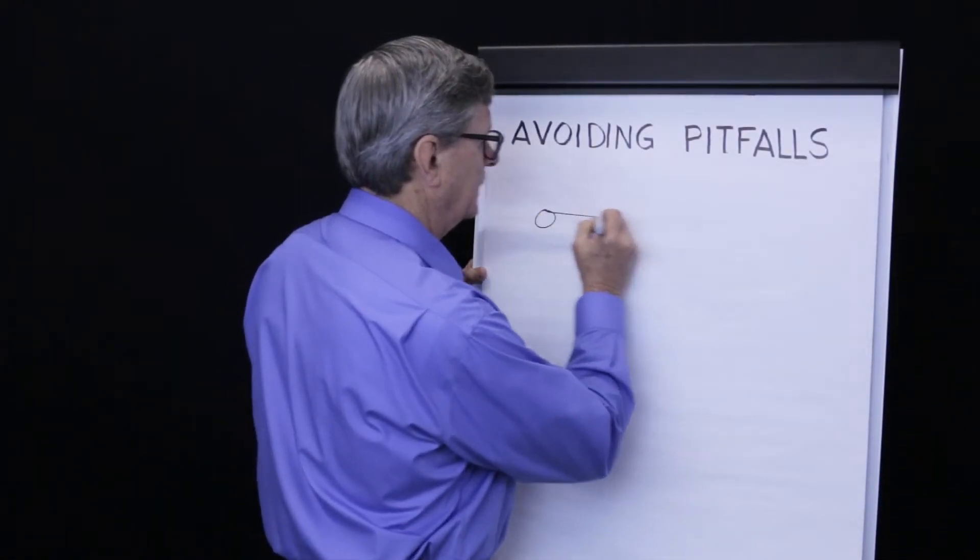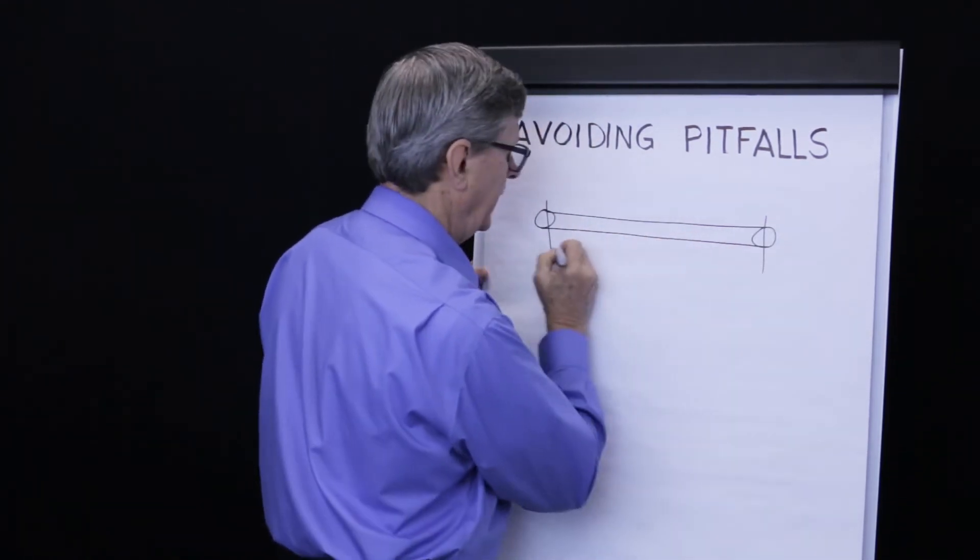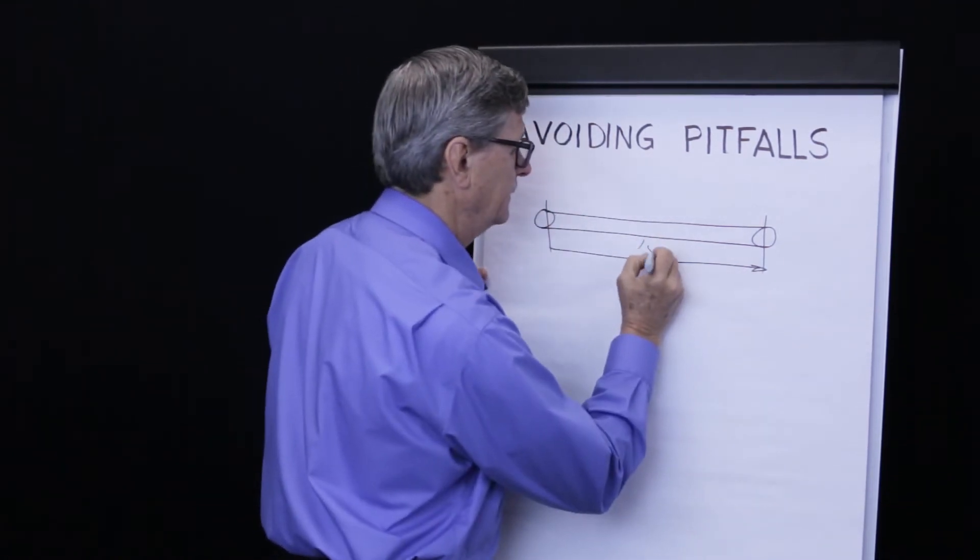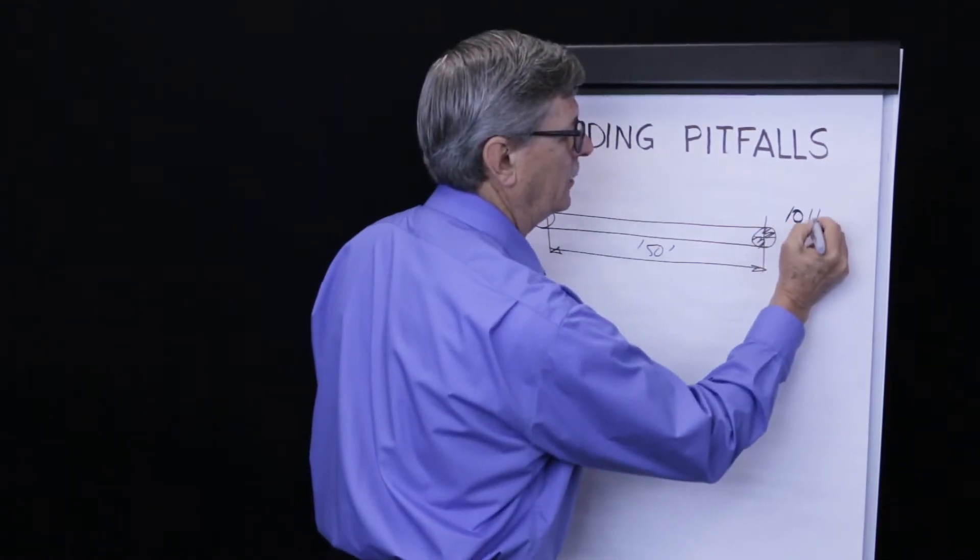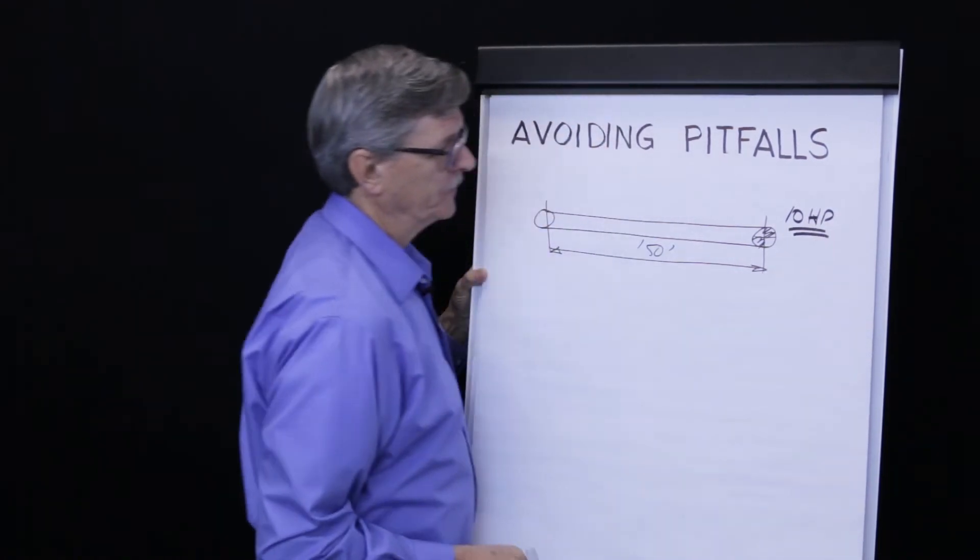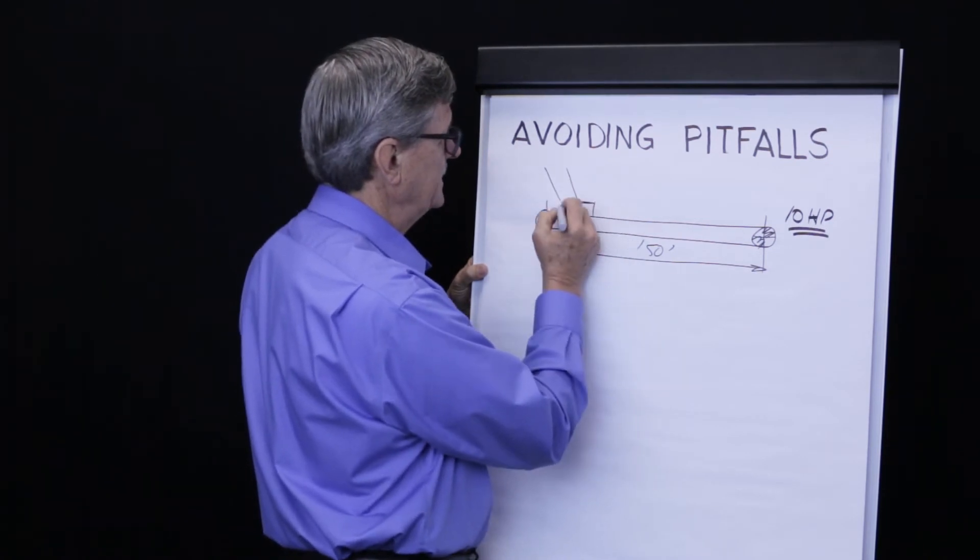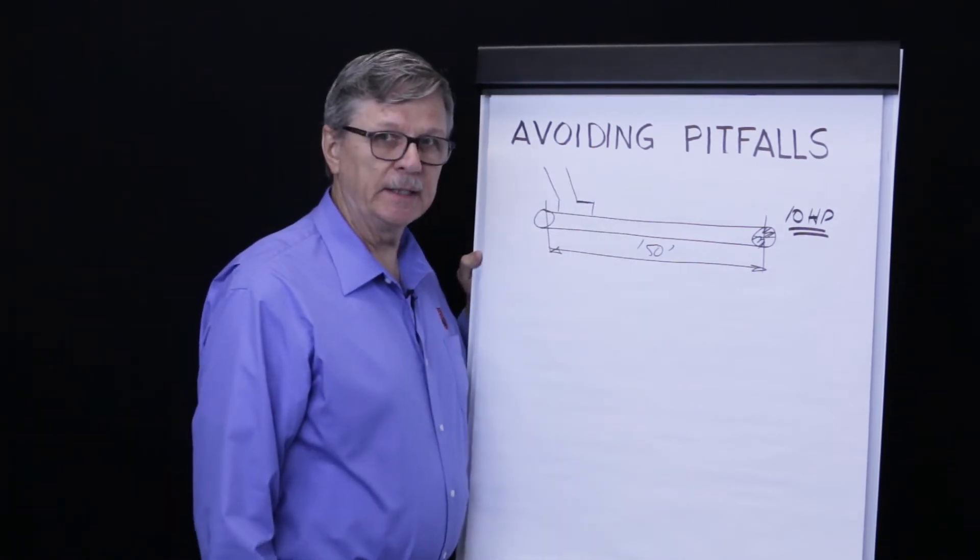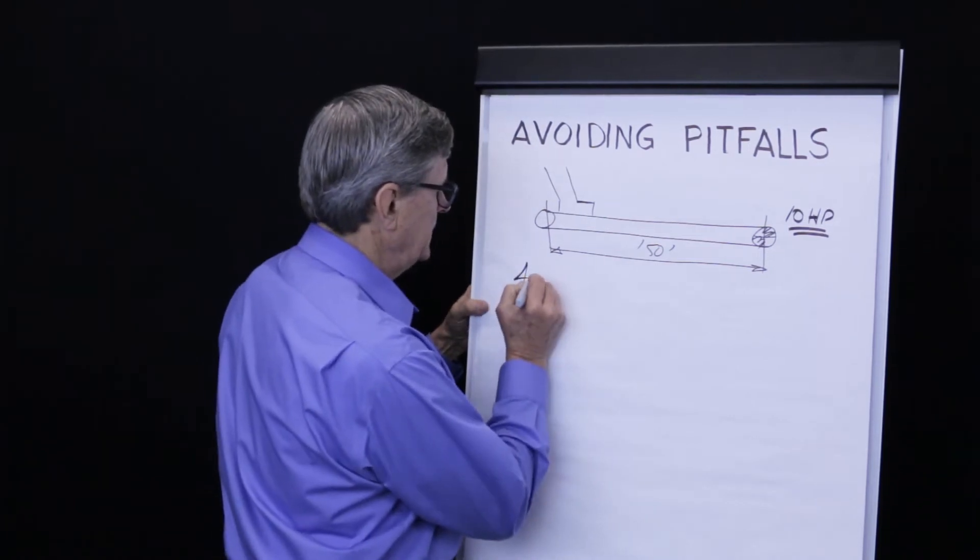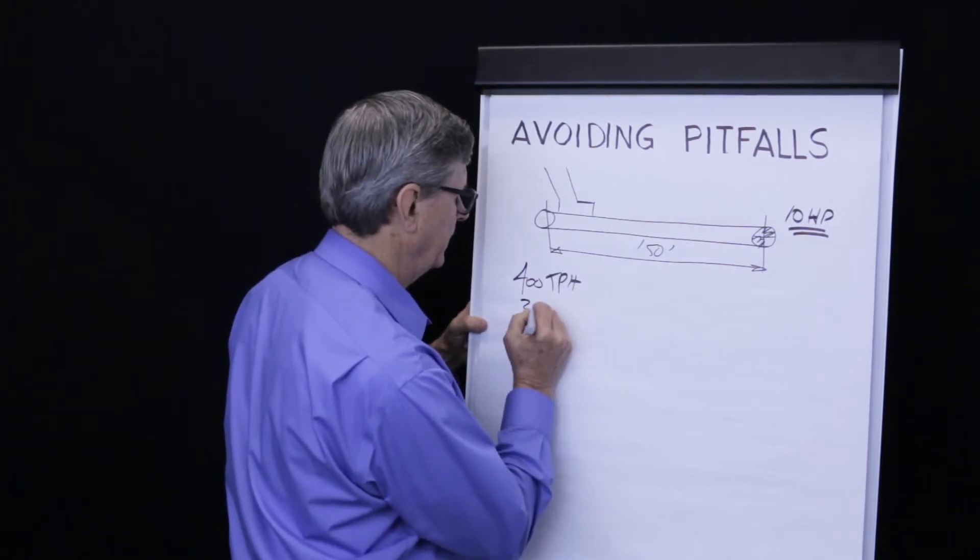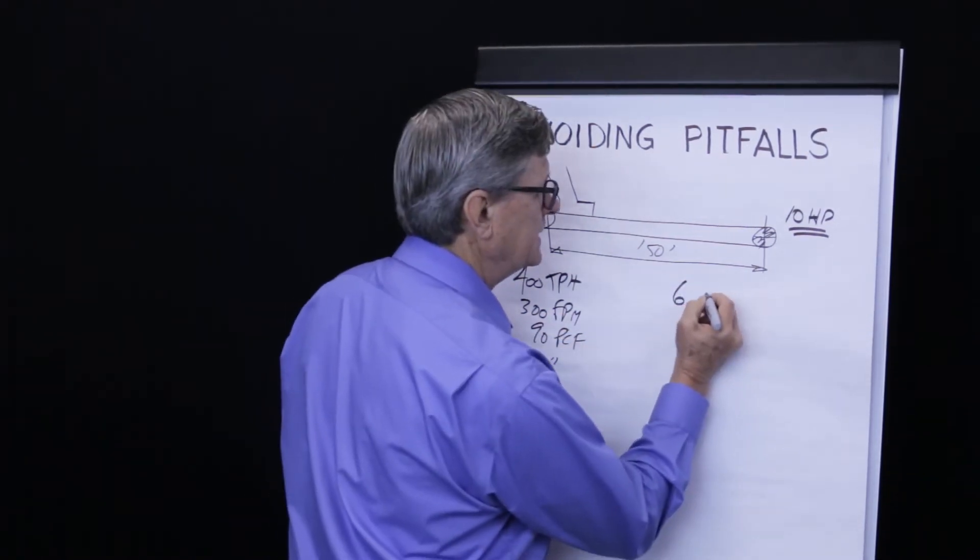Let me elaborate on the example that was given previously by saying that this conveyor has a length of 150 feet. The drive is at the head end. And let's say this conveyor was designed and installed with a 10 horsepower drive system. Let's say the conveyor is continuously fed using a skirtboard with a length of 12 feet and a material depth of 2 inches. As I showed before, 400 tons per hour with a 300 foot per minute belt speed with 90 pound per cubic foot material requires 6.9 horsepower.